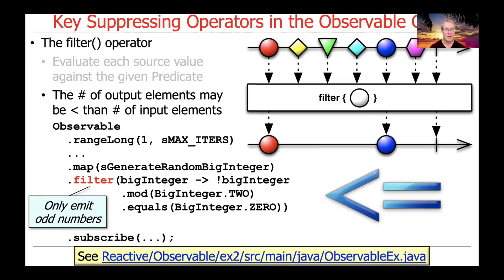As a result, the number of output elements may actually be less than the number of input elements. Of course, if all the predicate tests pass, then the number of output elements will be the same as the number of input elements. But if some of the tests fail, then you get fewer output elements than you did as input elements.